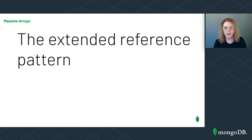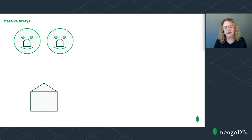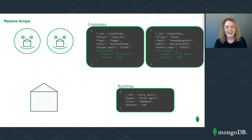If we find ourselves frequently using $lookup, another option is the extended reference pattern — a mixture of the previous two approaches where we duplicate some, but not all, of the data in the two collections. We only duplicate the data that is frequently accessed together. For example, if our application displays the user's name, building name, and state together, we could embed just the building's name and state fields in the employee documents while keeping the complete building information in separate documents. Since the building name and state are very unlikely to change, this solution works well.